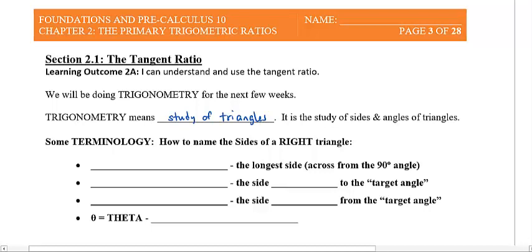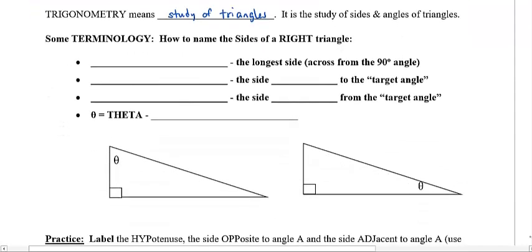To help us learn this stuff, we've got a few new terms that I need to teach you. We need to name the sides of a right triangle. You might have remembered this from your Math 8 studies, but the longest side, which is the one always across from the 90 degree angle — that's this one over here — is called the hypotenuse.